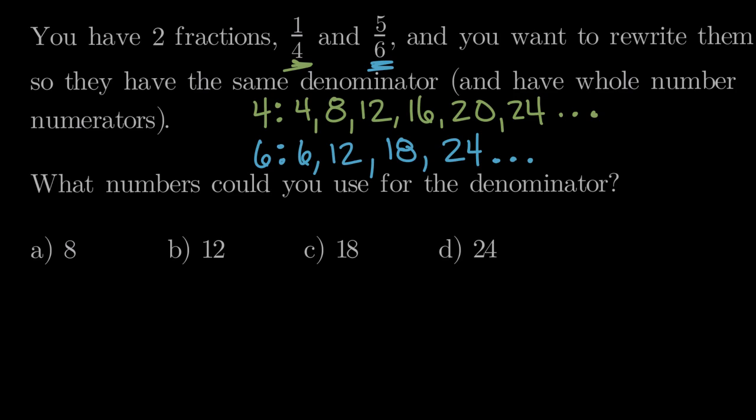So down to our answer choices. What numbers could we use for the denominator? Could we use 8? Let's look at these lists. 8 is a multiple of 4, so we could definitely split fourths into eighths. But 8 is not a multiple of 6, so we cannot split sixths into eighths. So 8 will not work as a denominator for both fractions.